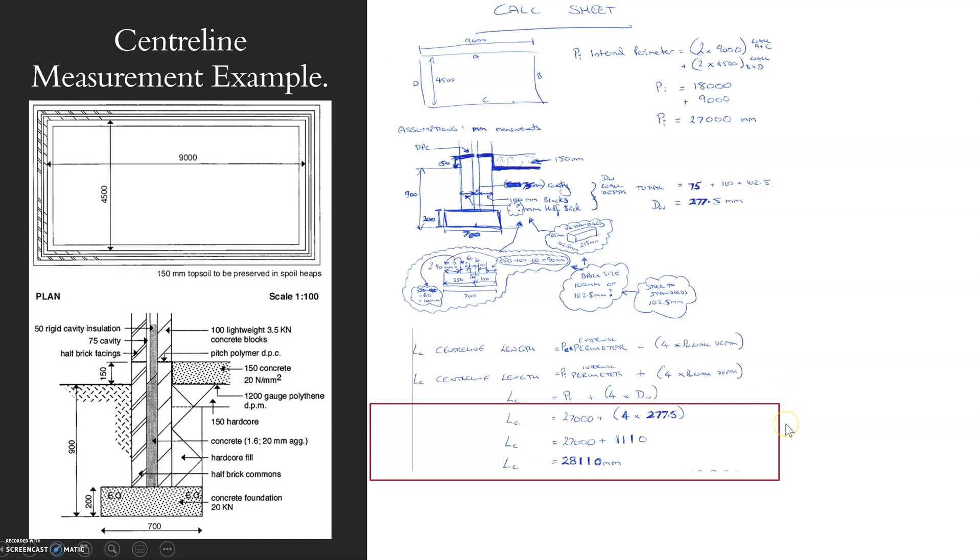We have the internal perimeter, so that's the information we're using. 27 metres from the perimeter, and then I use four times the depth of the wall. All that's doing is it's giving me the perimeter basically smack bang in the middle of that wall. That is all this calculation is helping us to work out, and there's my calculation.